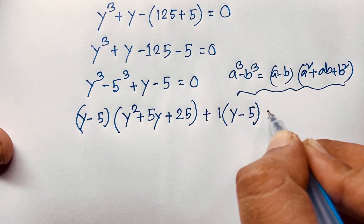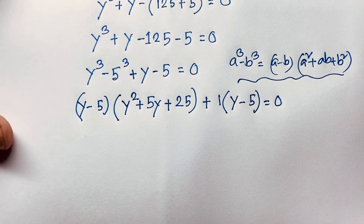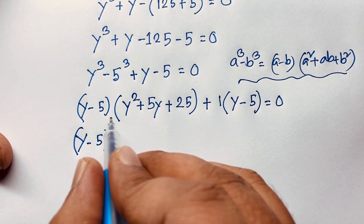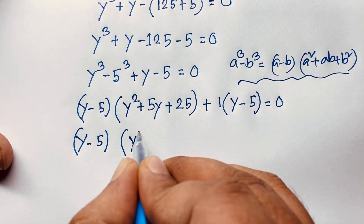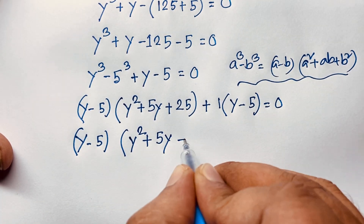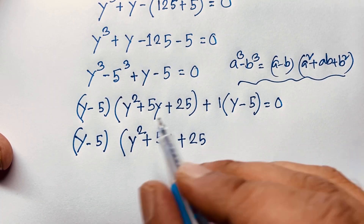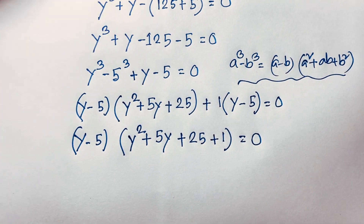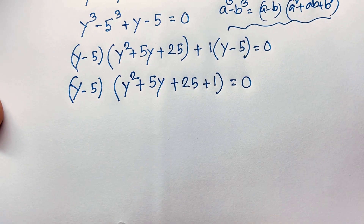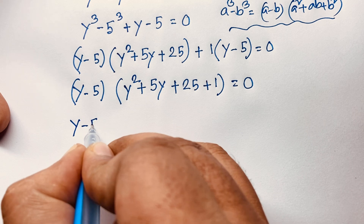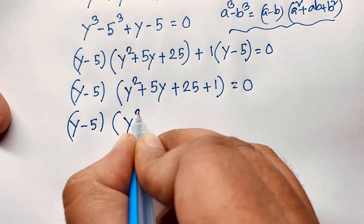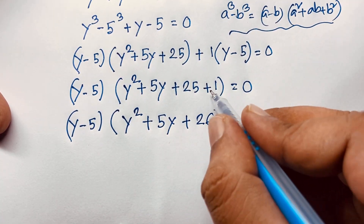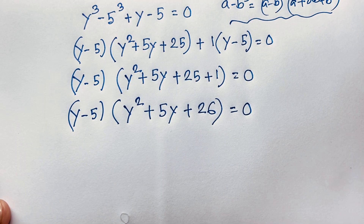Taking (y − 5) as a common factor, dividing through gives (y − 5)(y² + 5y + 25 + 1) = 0, which simplifies to (y − 5)(y² + 5y + 26) = 0, since 25 + 1 = 26.